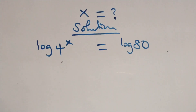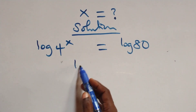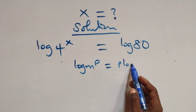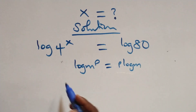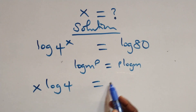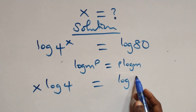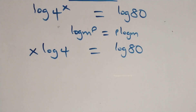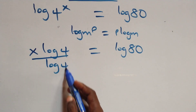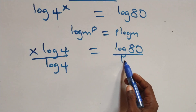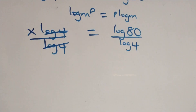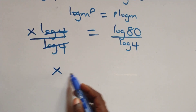We apply the power rule of logarithms, where log of m raised to power p equals p times log m. So we have x times log 4 equals log 80. Then we divide both sides by log 4, and log 4 cancels, leaving x equals log 80 over log 4.